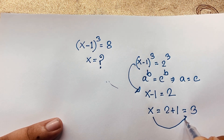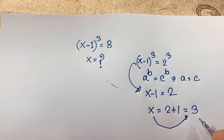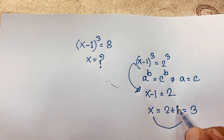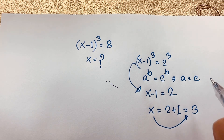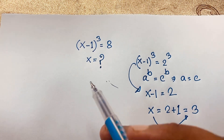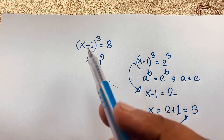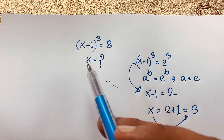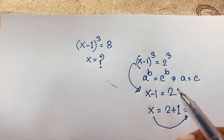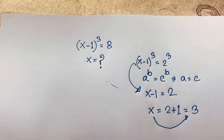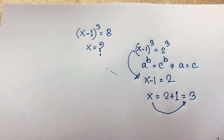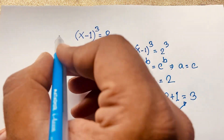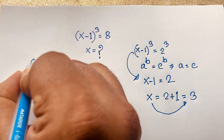So our real solution is x is equal to 3. But since this is a cubic equation, we need to find all 3 roots. The other 2 roots — let's find out what they are. We'll apply the cube root approach step by step.